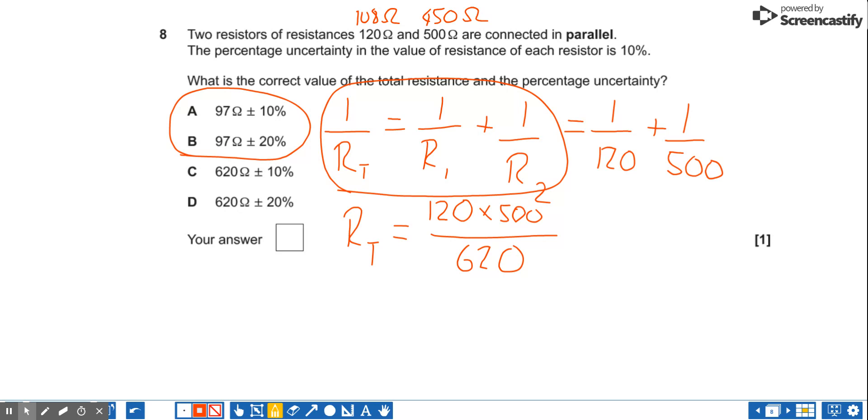And that gives me an answer of 87 ohms. So the smallest it could possibly be is 87 ohms. And what you'll notice is that that is about 10 percent smaller than the 97.